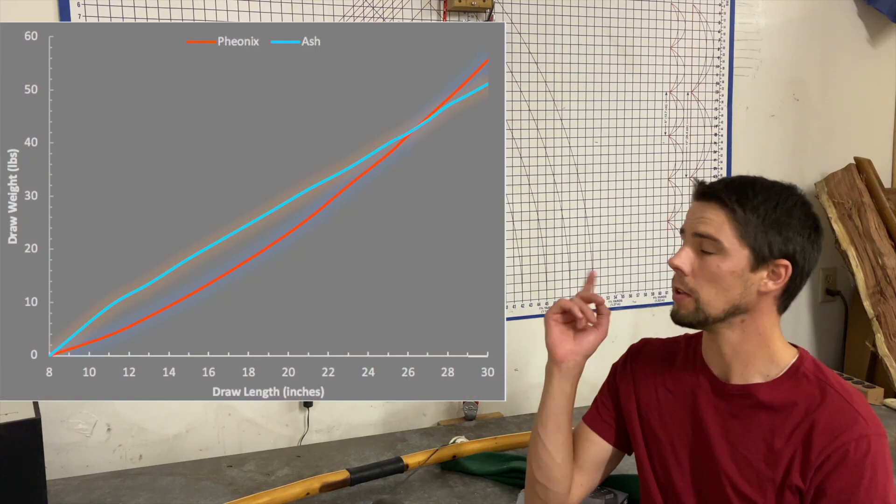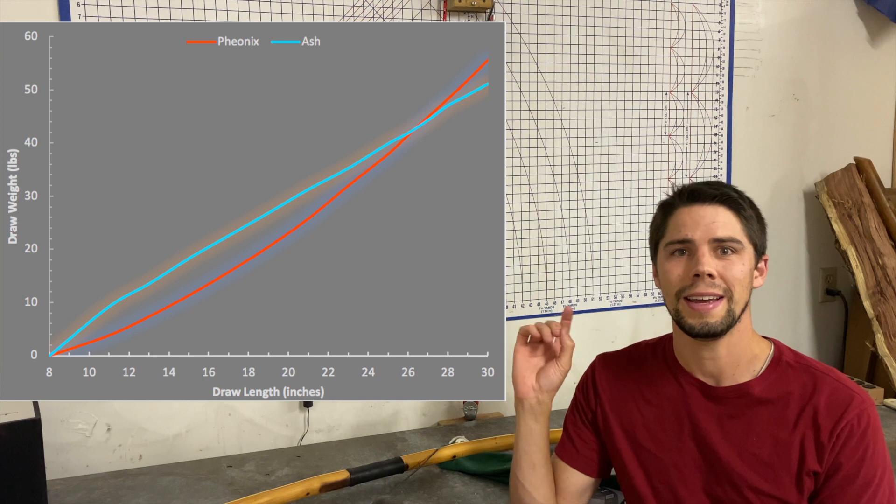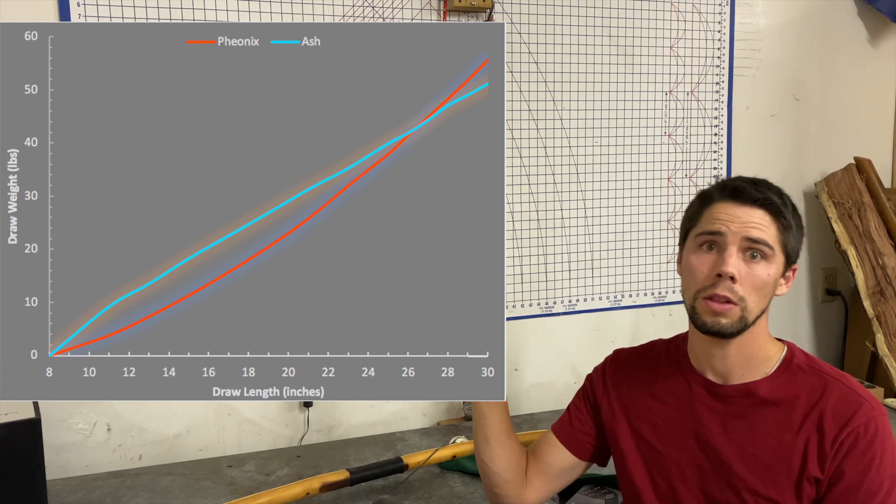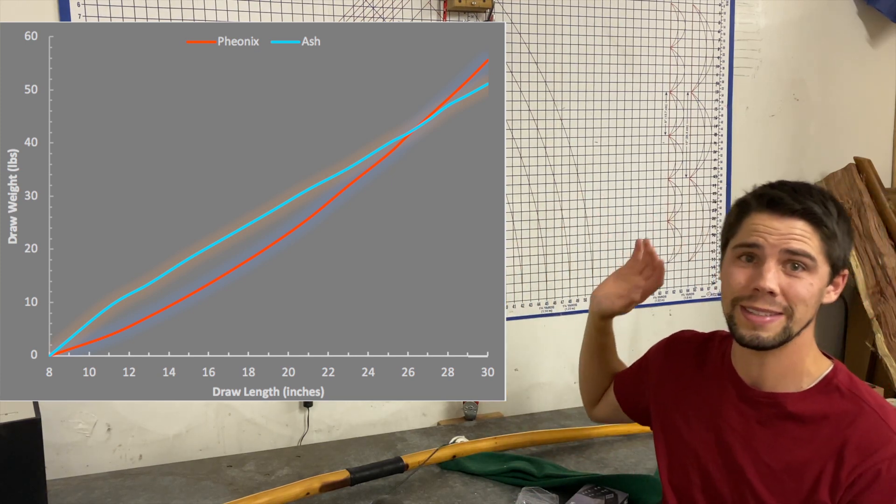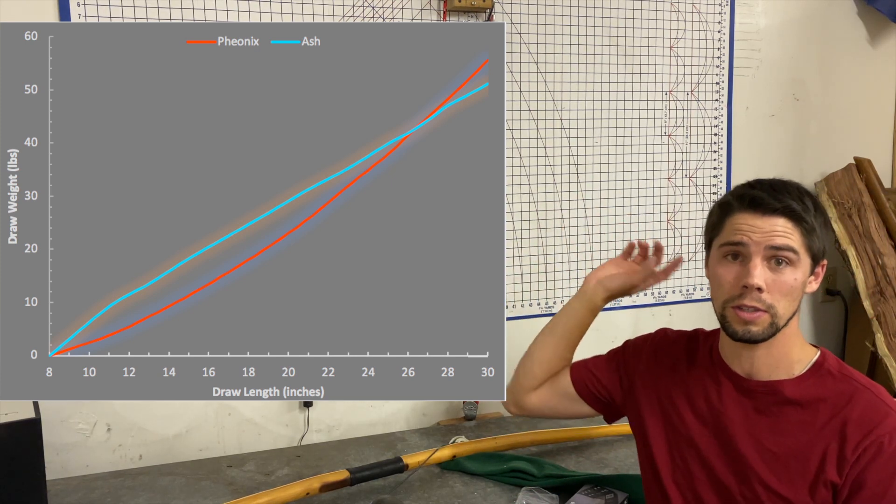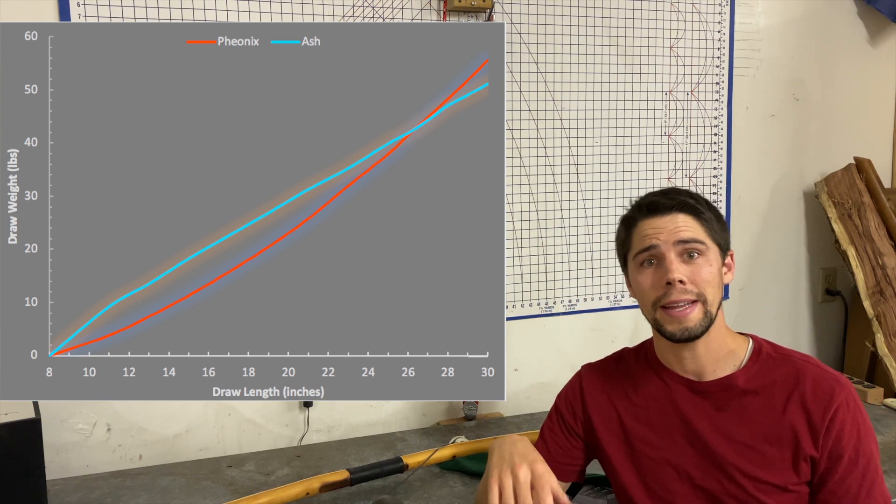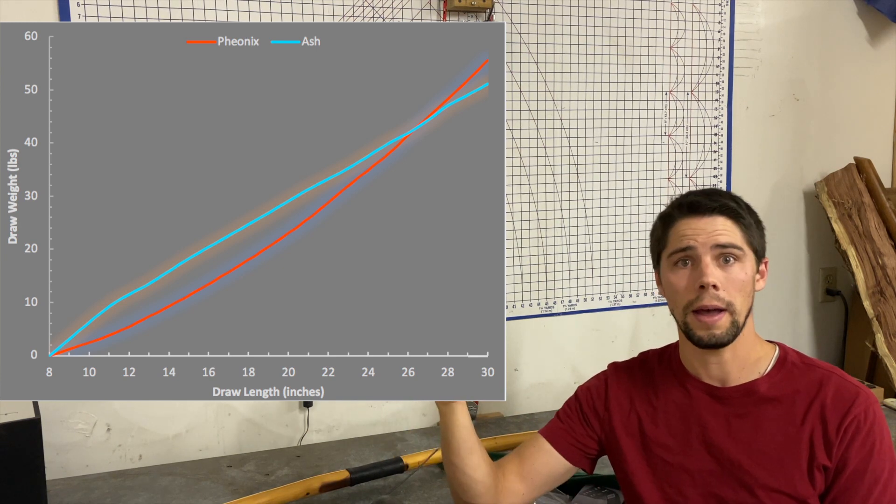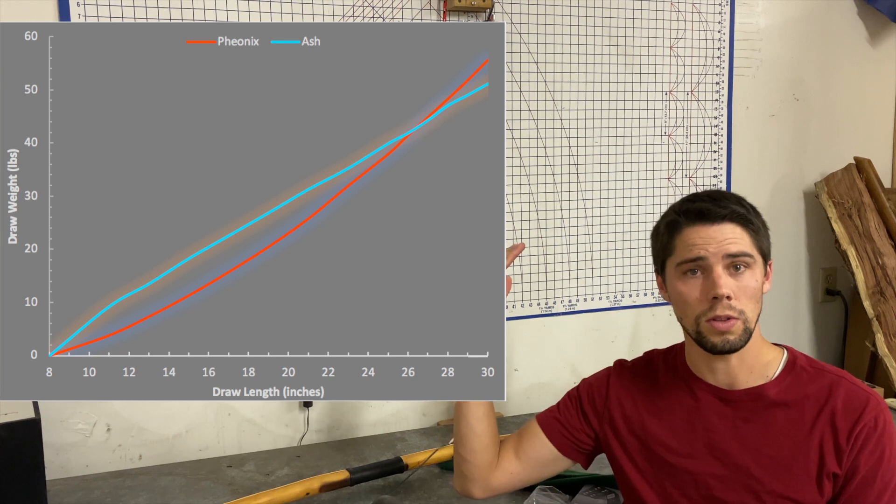Alright, so as you can see along the curve here, the early weight has a lot to do with speed. Phoenix has a very low early weight and then it goes a while until about 26 inches before it actually crosses and goes higher than the ash bow. Whereas when you're looking at the ash bow, you can see that early on it starts up high, a good early draw weight, and then it continues linearly, nice and straight and continual until it gets to the final draw weight of about 50, 51 pounds.